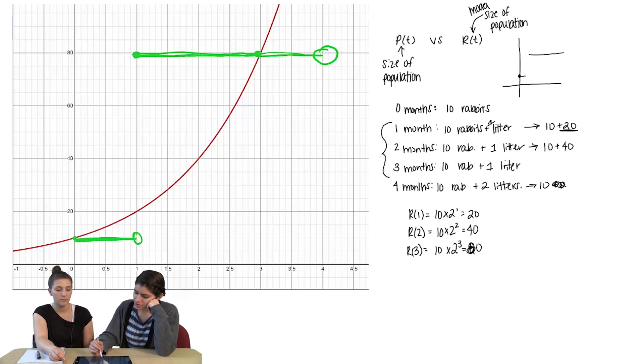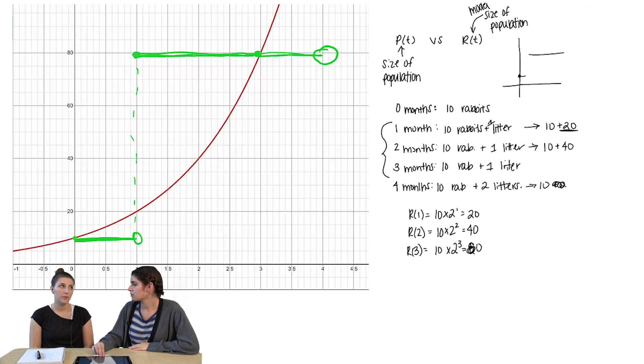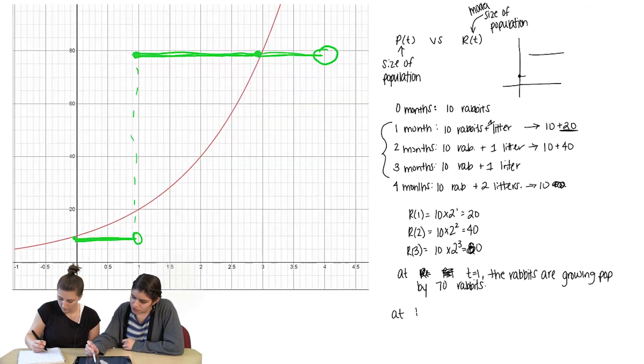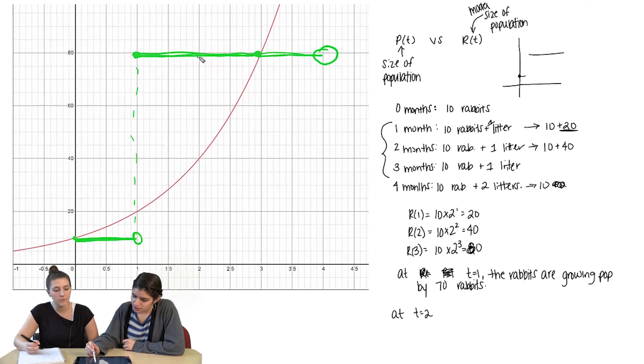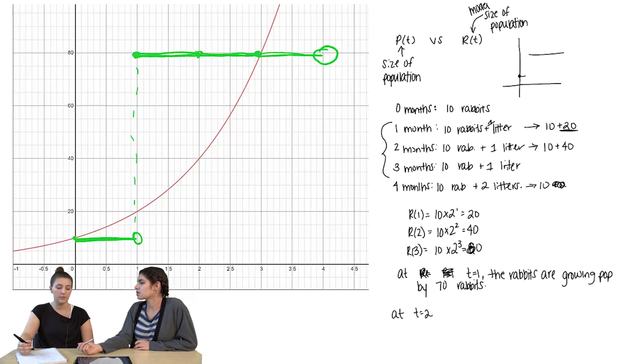How quickly is it growing? Well, at t of one, it did this thing where it jumped, right? It jumped like this. So how quickly did it grow from one, like when they had their babies, what did it grow by? It grew by 70 babies. And then at t of two, which is right here, so at t of two, the rate of change is zero. They're not changing, so they're not having more babies at two months.